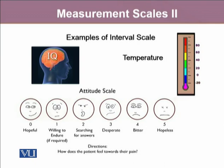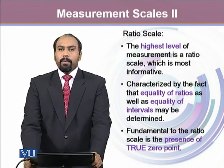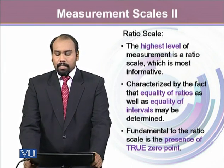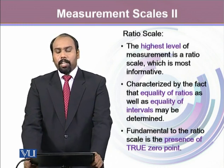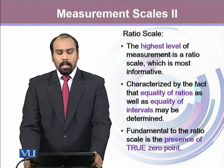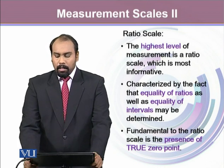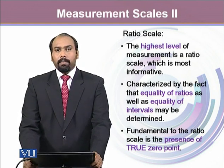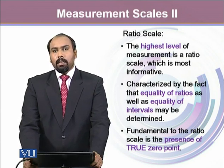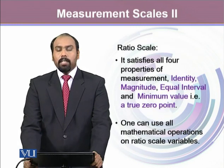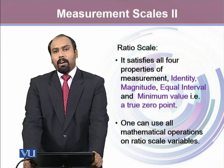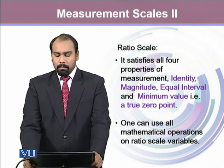The last type of measurement scale is a ratio scale, which is the highest level of measurement. It is the most informative measurement scale. It is characterized by the fact that equality of ratios as well as equality of intervals may be determined. Fundamental to the ratio scale is the presence of a true zero point. Unlike the interval scale where we have an arbitrary zero point, in a ratio scale, whenever a value turns out to be zero, it means total absence. The ratio scale satisfies all four properties of measurement: identity, magnitude, equal intervals, and a minimum value.